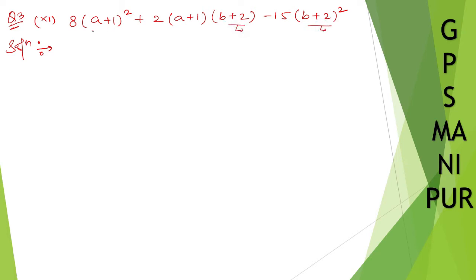This one, take the value of x something like that, and split the middle term. Take (b+2) as constant and split the middle term. If you don't understand, look here. How are we going to do this one?